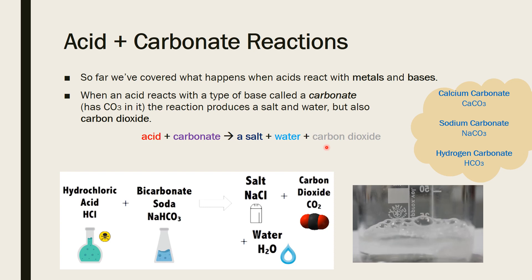Generally the reaction is: acid + carbonate → salt + water + carbon dioxide. Another way you can identify an acid-carbonate reaction is by recognising the three very common carbonates: calcium carbonate (CaCO₃), sodium carbonate (NaCO₃), and hydrogen carbonate (HCO₃). Notice that they each have CO₃ at the end — that's how you can tell it's an acid-carbonate reaction rather than just an acid-base reaction.